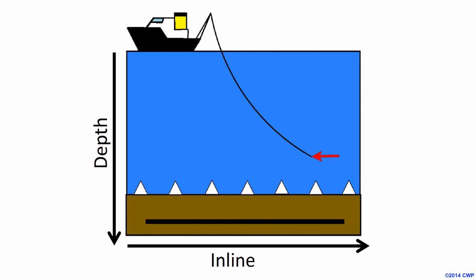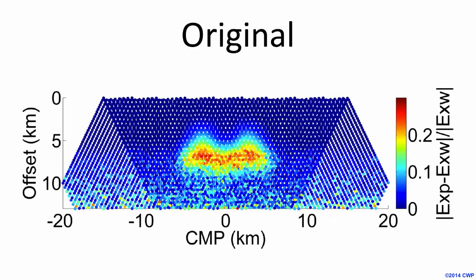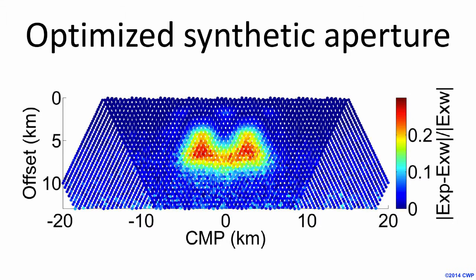The technique that we propose is optimized synthetic aperture. This is a pseudo-depth slice of some synthetic CSEM data with noise, and the color bar here is showing the normalized difference. When we apply our optimized synthetic aperture to this, we've increased the magnitude, reduced the noise, and also better defined the structure.